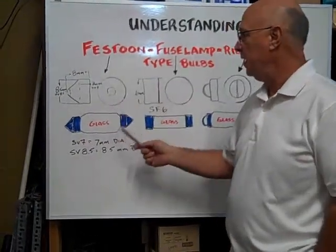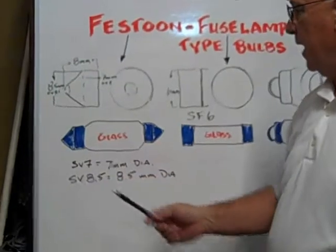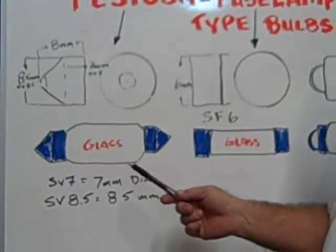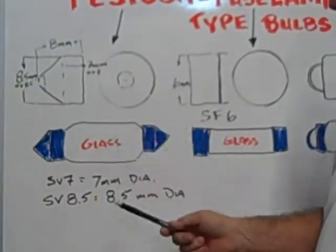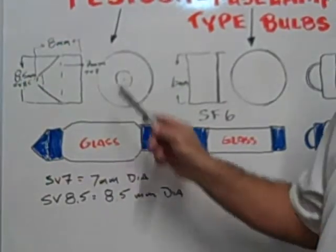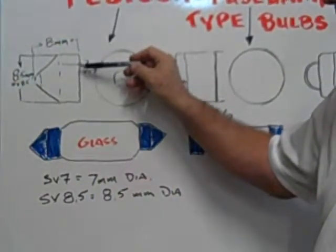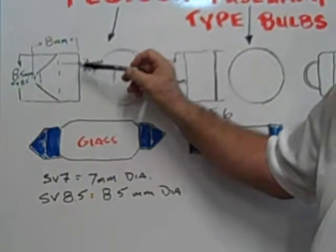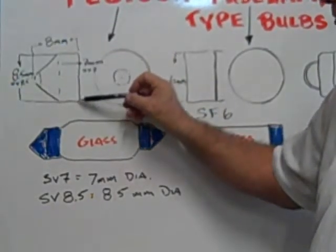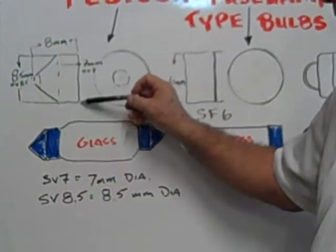The Festoon bulb has a pointed end and comes in two sizes diameter-wise. The SV7 is 7mm in diameter across the base. The SV8.5 is 8.5mm across the entire diameter.